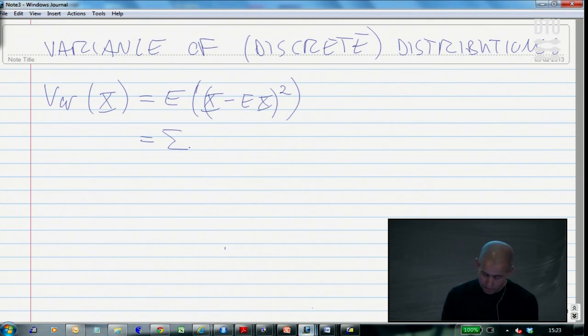The definition of variance is to take each individual observation - we sum over all possible observations, subtract the mean from those, square them, and multiply by the density. This is the summation formula without indices. This is the formula for a discrete variance.